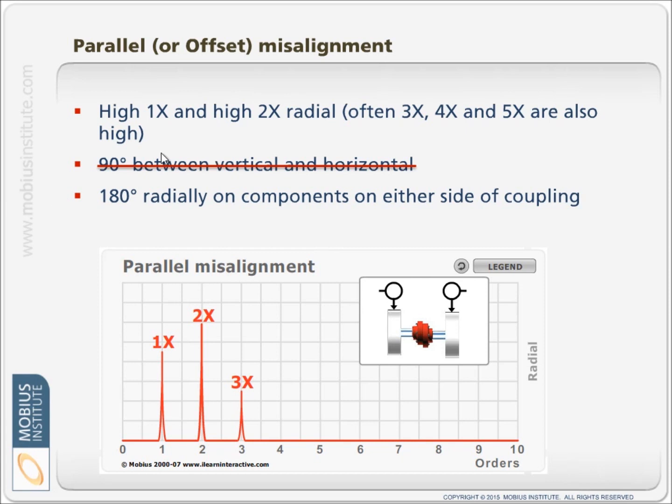The other thing to consider is that in the case of misalignment, if we compare the vertical and horizontal phase, there will not be a 90-degree relationship between the two as we would see with unbalance. So it's easy to confuse the two in certain circumstances, and that's one way to rule it out.